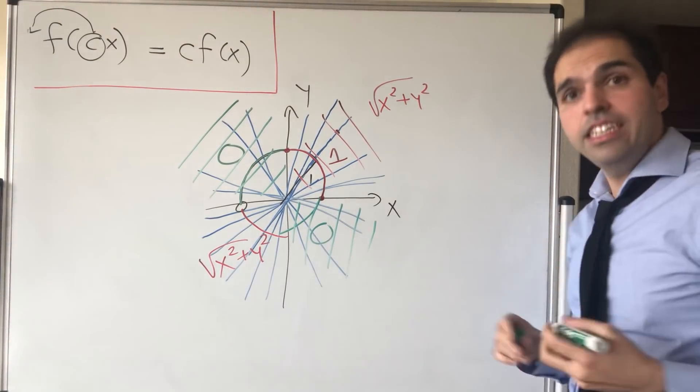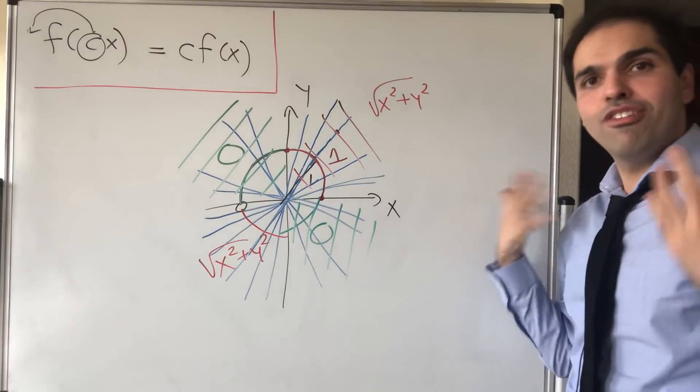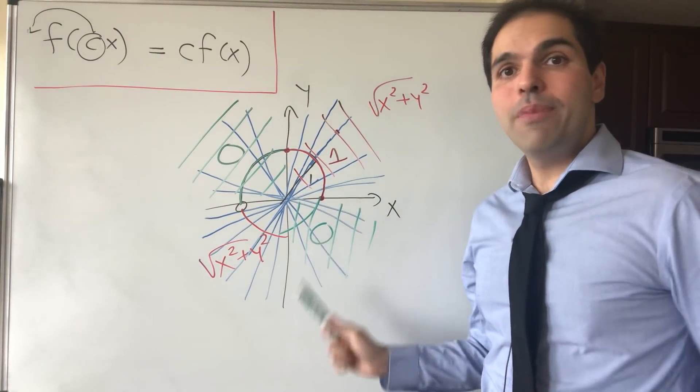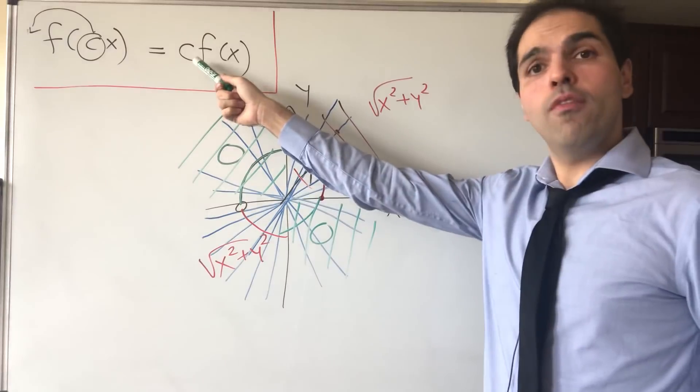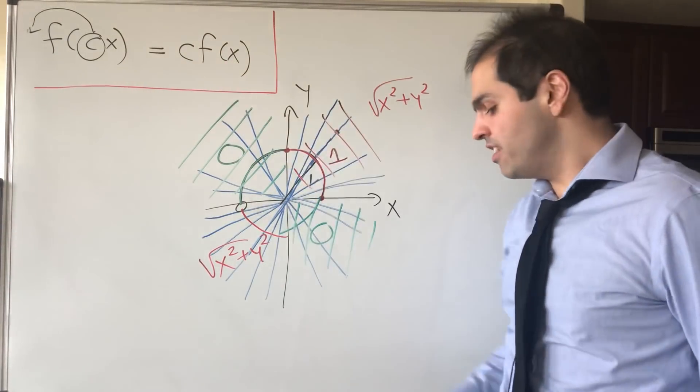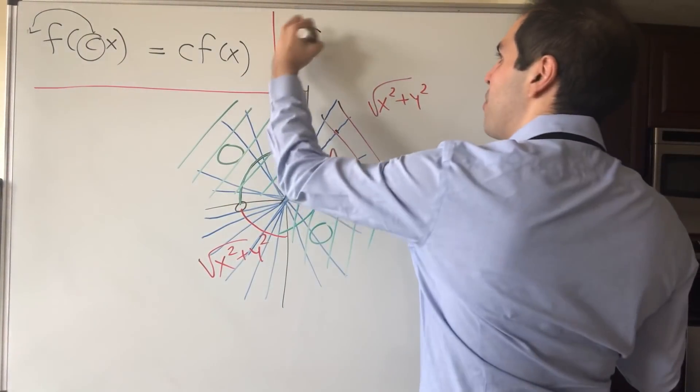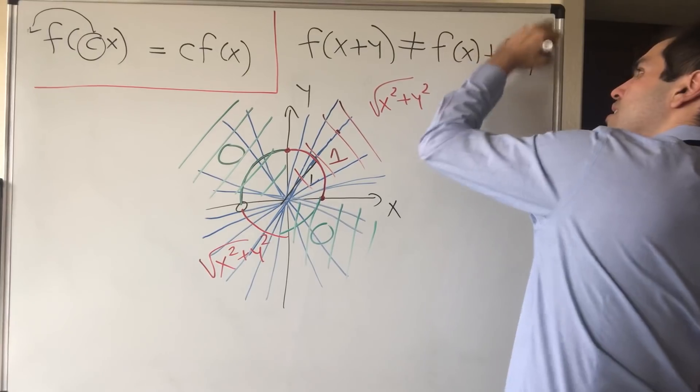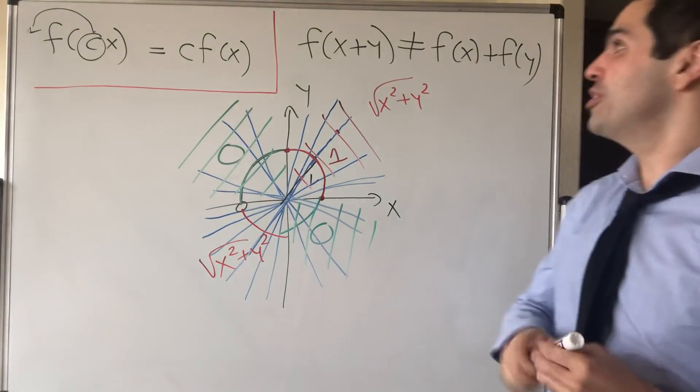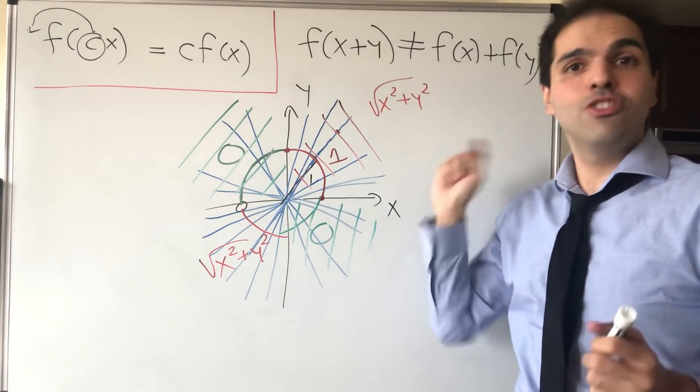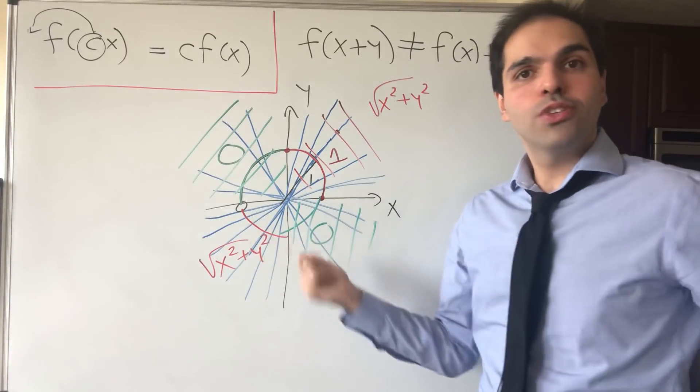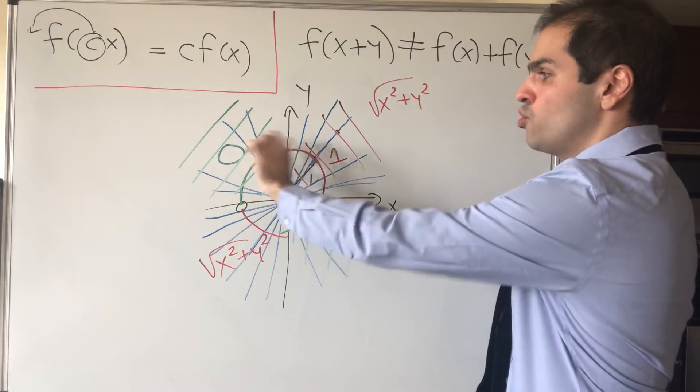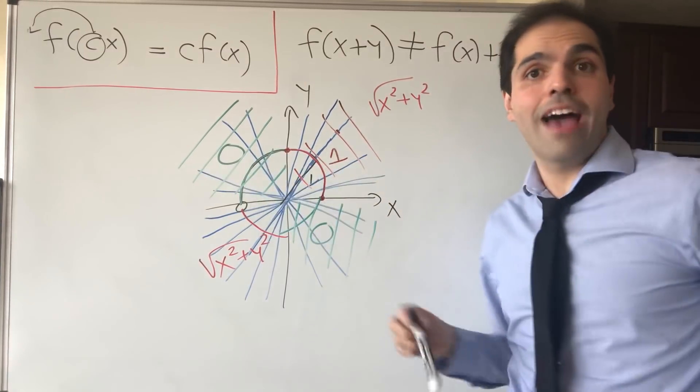You can check that indeed, even here, we would have f of cx equals cf of x. Why is this useful? Because it turns out it's an example of a function which satisfies this multiplicative property, but does not satisfy the additive property. In other words, which is not linear. And here's a very neat contradiction argument. Suppose it were true that f would be linear, then linear functions are continuous. Just apply an epsilon delta argument. But this function is definitely not continuous, because on this circle it jumps from its values being 1 to its values being 0.